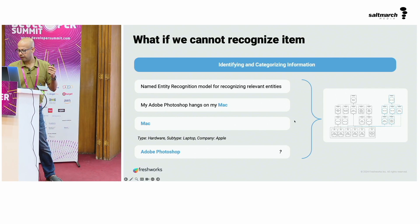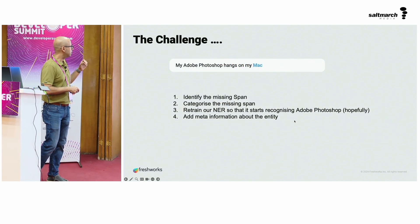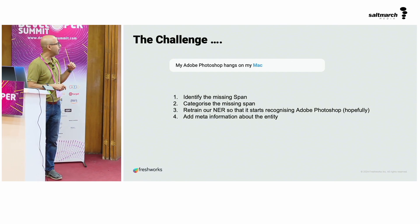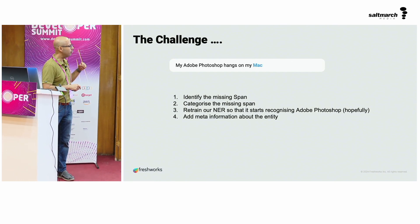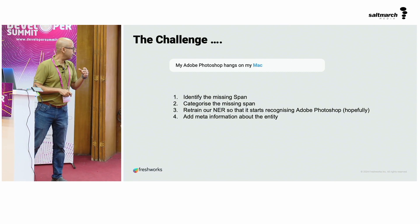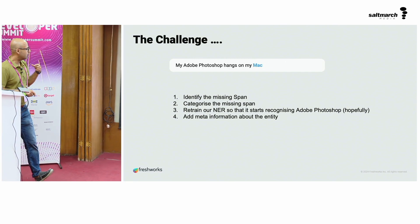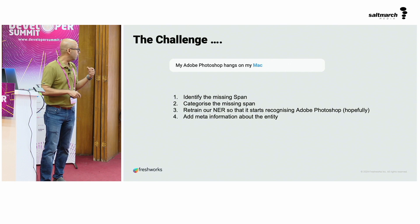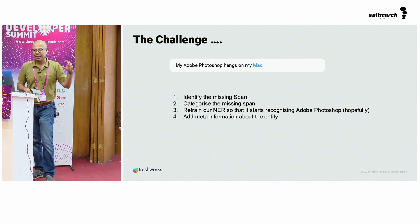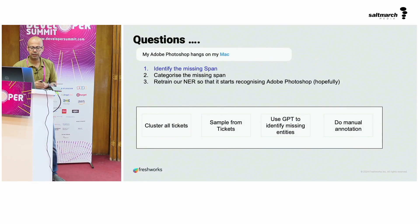To solve this, we use four different steps. We have to first identify the missing span — in this case, Adobe Photoshop. Second, we categorize that span. Third, we retrain our named entity model so it starts recognizing Photoshop going forward. And fourth, we add meta information about the entity. Let me walk through these four steps.